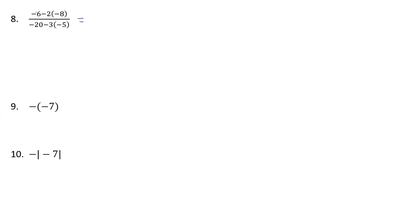If we look in the numerator, we have a negative 6 minus 2 times negative 8. We have a product here, so that negative times a negative is positive. Now we have a negative 6, and we have to do the multiplication first, so 2 times 8 is 16. What about the denominator?